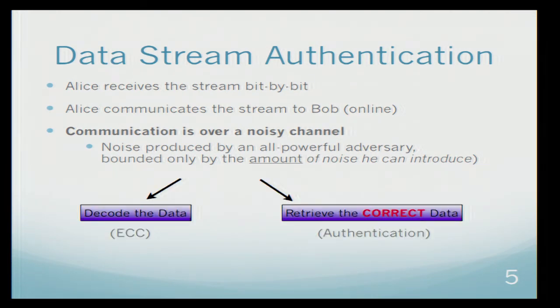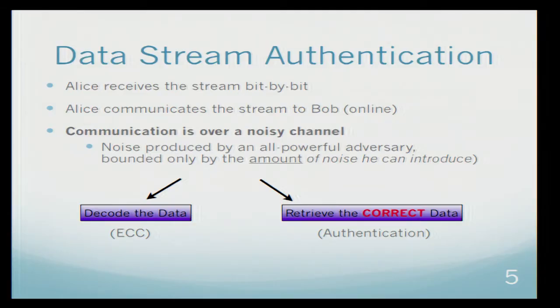We want two things. First we want Bob to be able to deal with the noise, to be able to decode the data. This has the flavor of error correcting. But on top of that we want Bob to be able to learn the correct data and to be able to say which part of the data is indeed correct and which is not. This has the flavor of authentication.